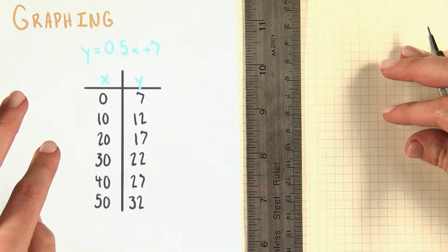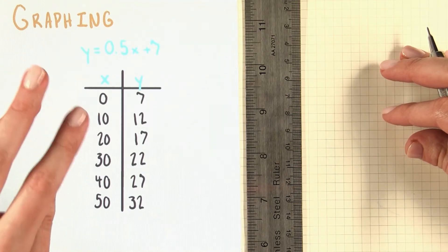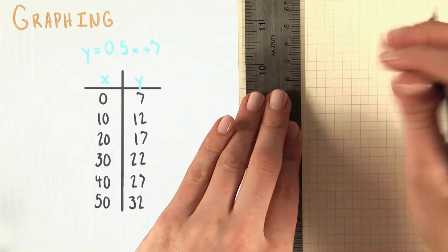The xy table we created earlier is going to be really useful for helping us graph points, but before we can graph those points, we need to set up our coordinate plane. So, we need to draw a set of axes we can plot these points on.